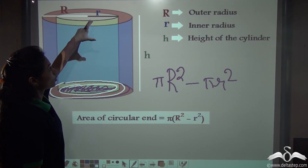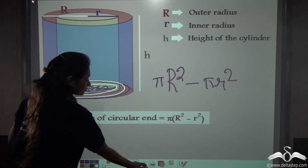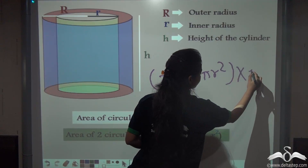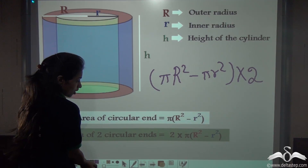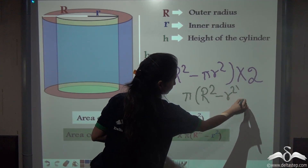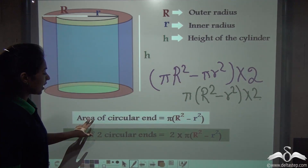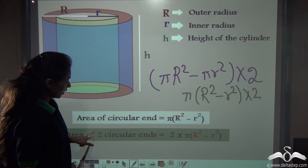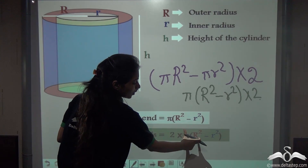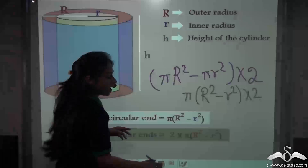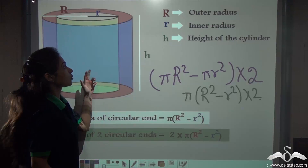But we have two rings — one at the top and one at the bottom. So the area of two circular ends will be 2 × (πR² − πr²), which can be written as 2π(R² − r²), where capital R is the outer radius and small r is the inner radius of this hollow cylinder.